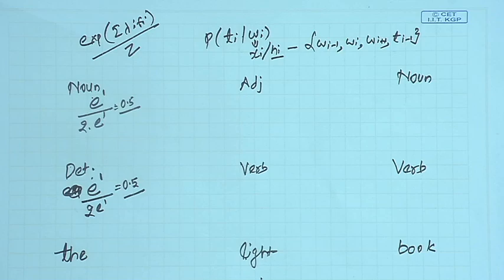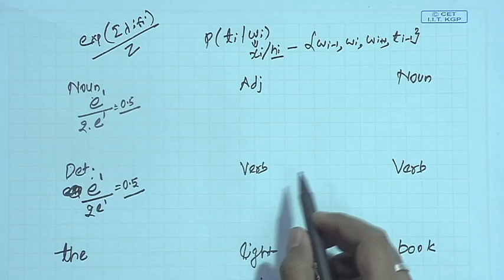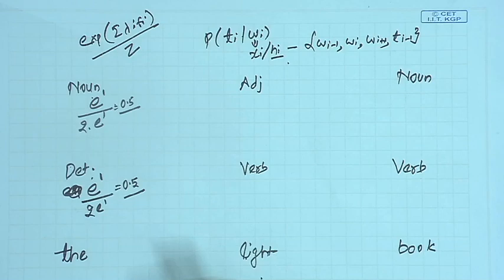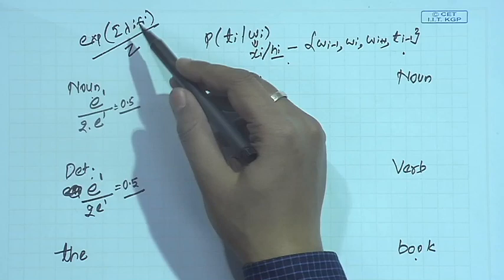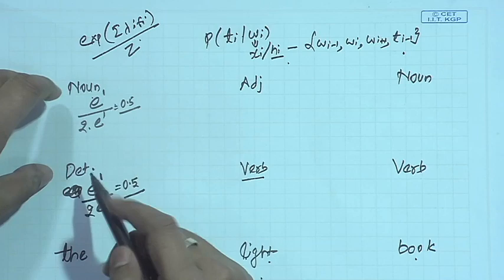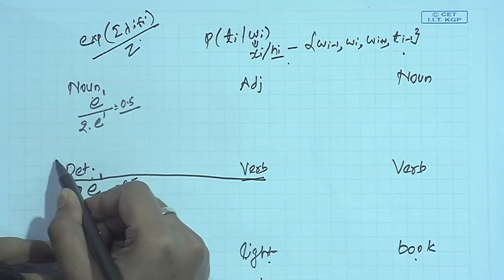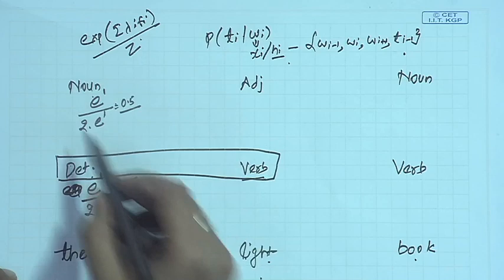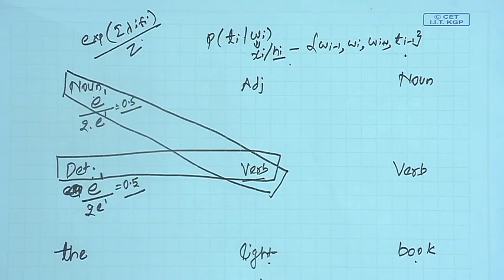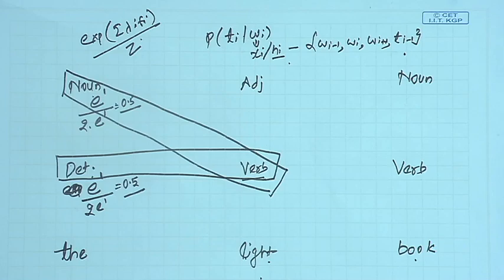For the word 'light', the history includes the previous word, current word, next word, and the previous tag — which can be determiner or noun. So we need to talk in terms of sequences: we have determiner→noun, determiner→verb as one sequence starting from determiner, and noun→verb as another. We take both sequences separately and compute the probability of tag verb and tag adjective for each.